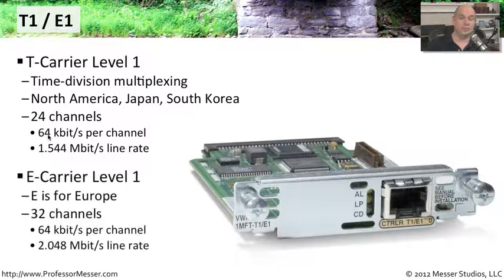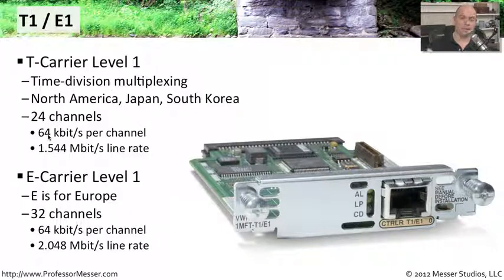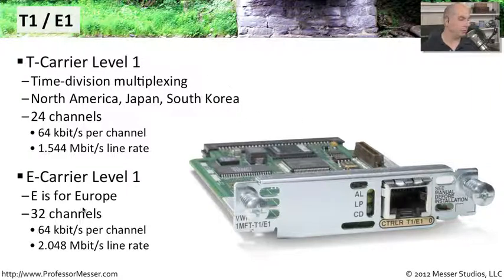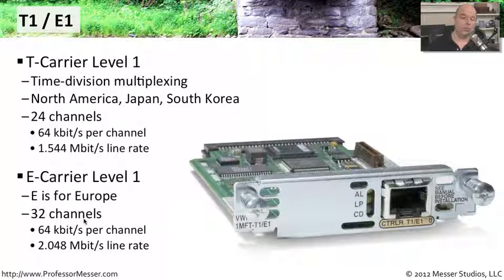In Europe, there's a different set of standards. They don't have T1 connections in Europe — they use E1 connections. The E is for Europe; this is the E carrier level one. And instead of 24 channels, there are 32 channels in an E carrier level one.